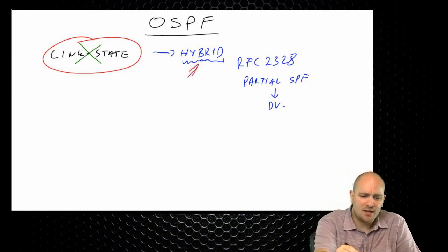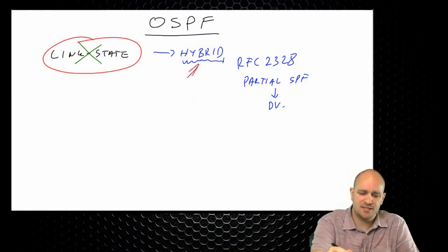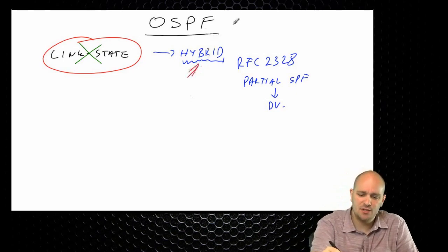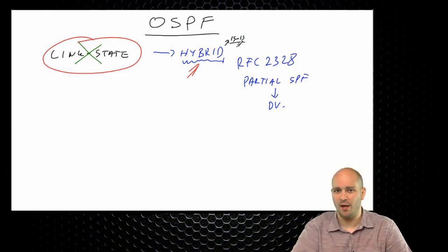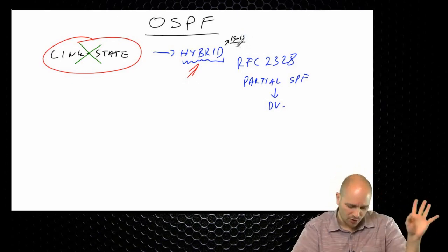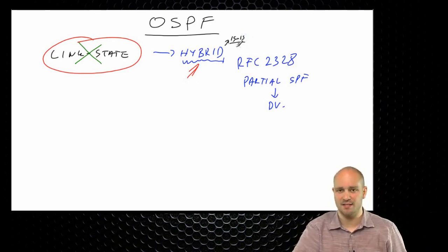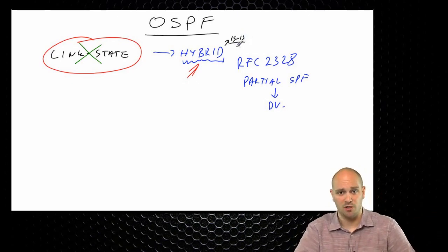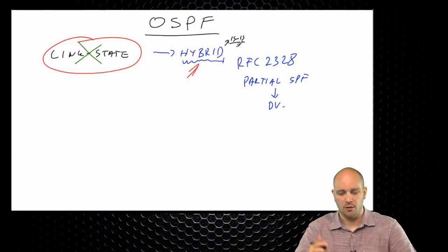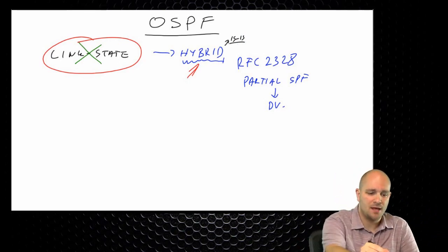This is also true for IS-IS. IS-IS is also, in a way, a hybrid routing protocol, but you don't need to care about IS-IS, so I'm not going to waste too much time talking about it.